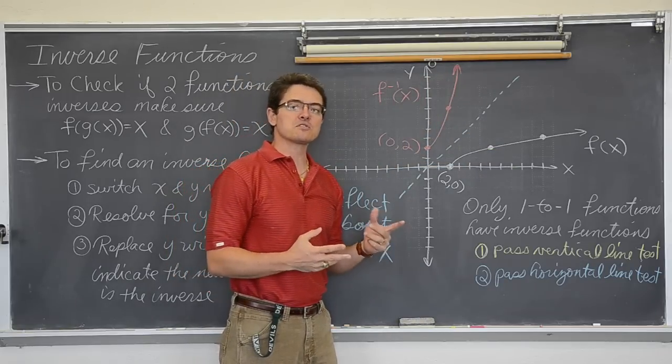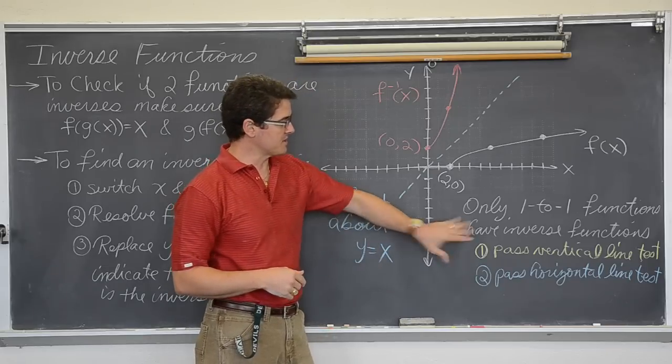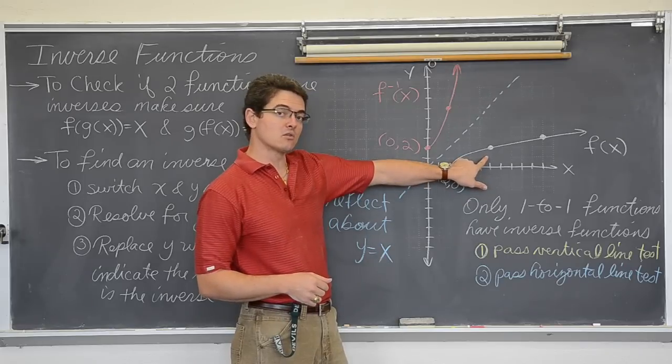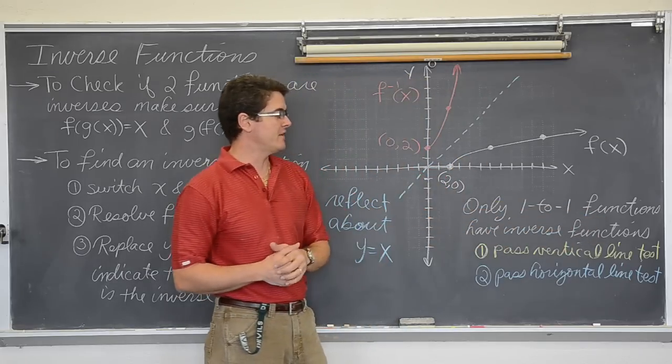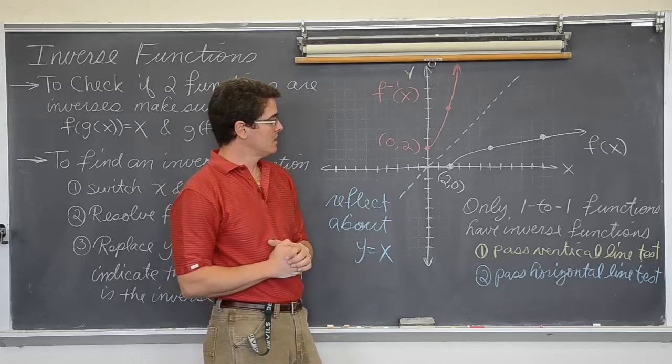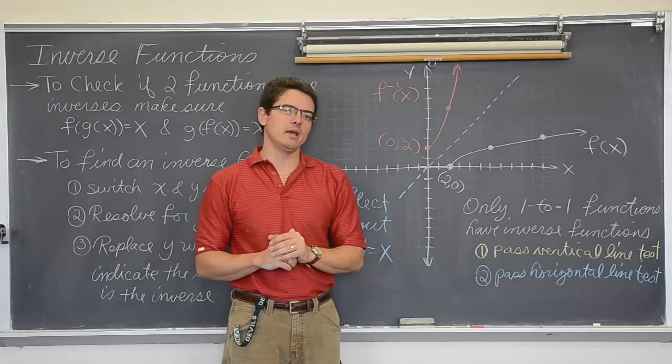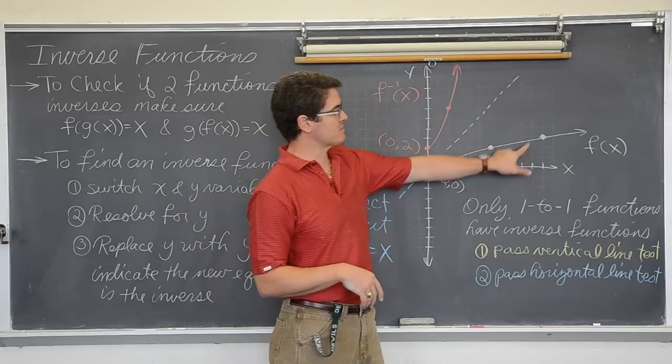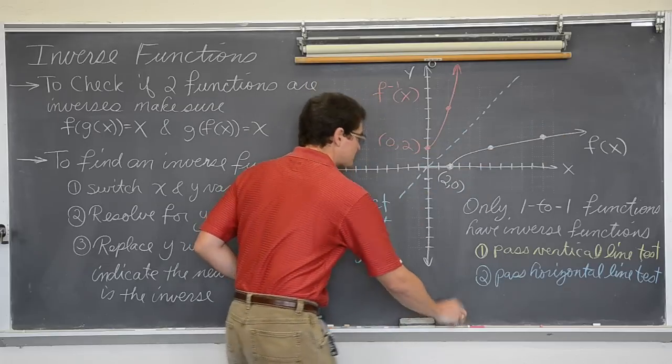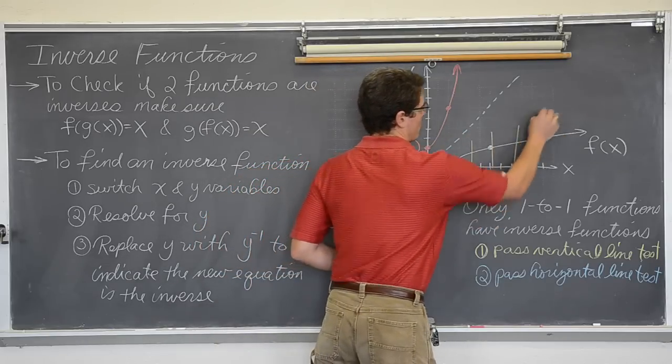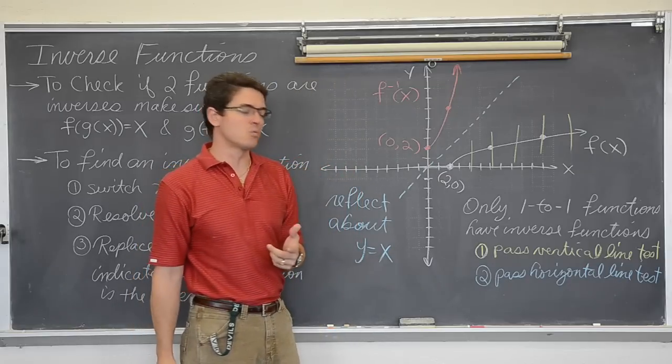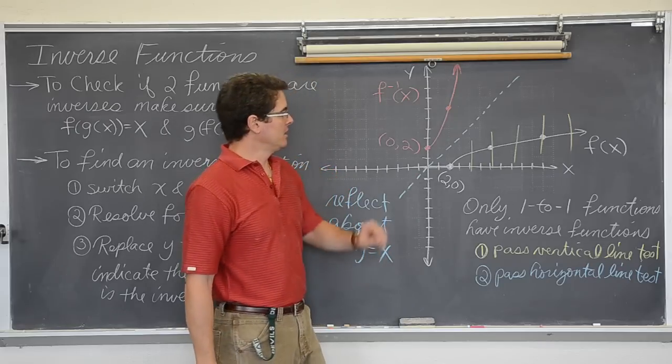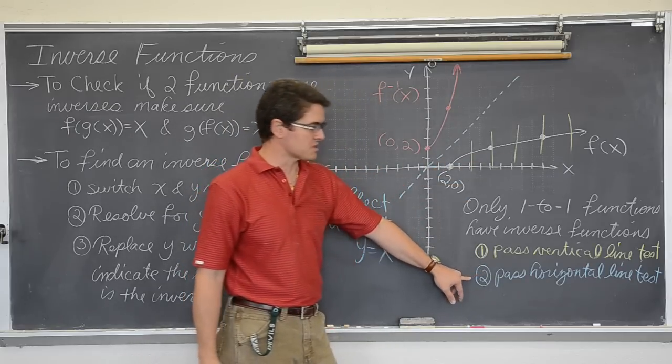Now, is it an inverse function? Well, that is what this is about. Only one to one functions will have an inverse function. Well, you know a function means each x only has one y, right? We normally check that with a vertical line test. Well, my original graph would pass my vertical line test because no matter where I draw my vertical line, it will only cross once. Well, for this function to have an inverse function, it must also pass the horizontal line test.